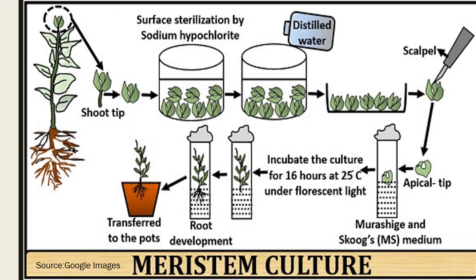We select the shoot tip — we take the part of the shoot, cut it, take it out, and put it in a beaker or container for surface sterilization. For surface sterilization we use two basic chemicals: mercury chloride, which is more toxic, and sodium hypochlorite. A 0.01 percent solution of sodium hypochlorite — we dip the explants for one minute only, not more, because these are toxic chemicals.